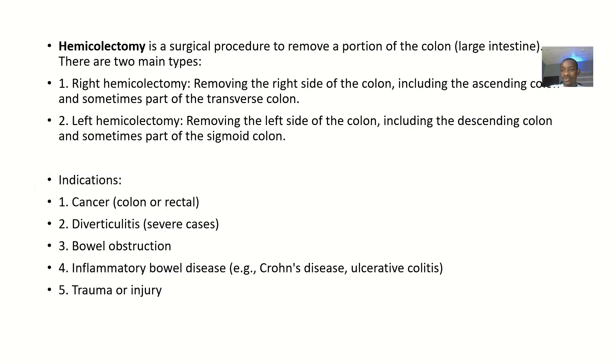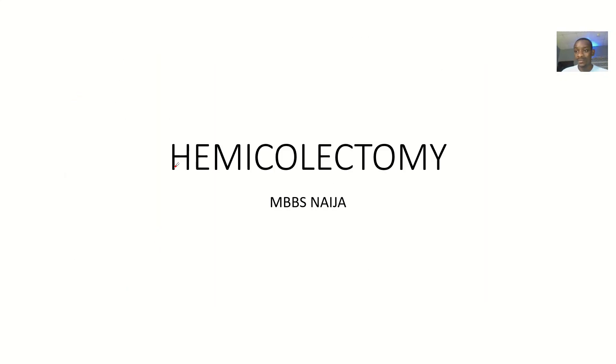Let's say there is a problem to the large intestine and you want to correct this problem surgically. If the problem is just at one part of the large intestine, you want to cut that part and join the other parts that are not bad. This is what is known as hemicolectomy.